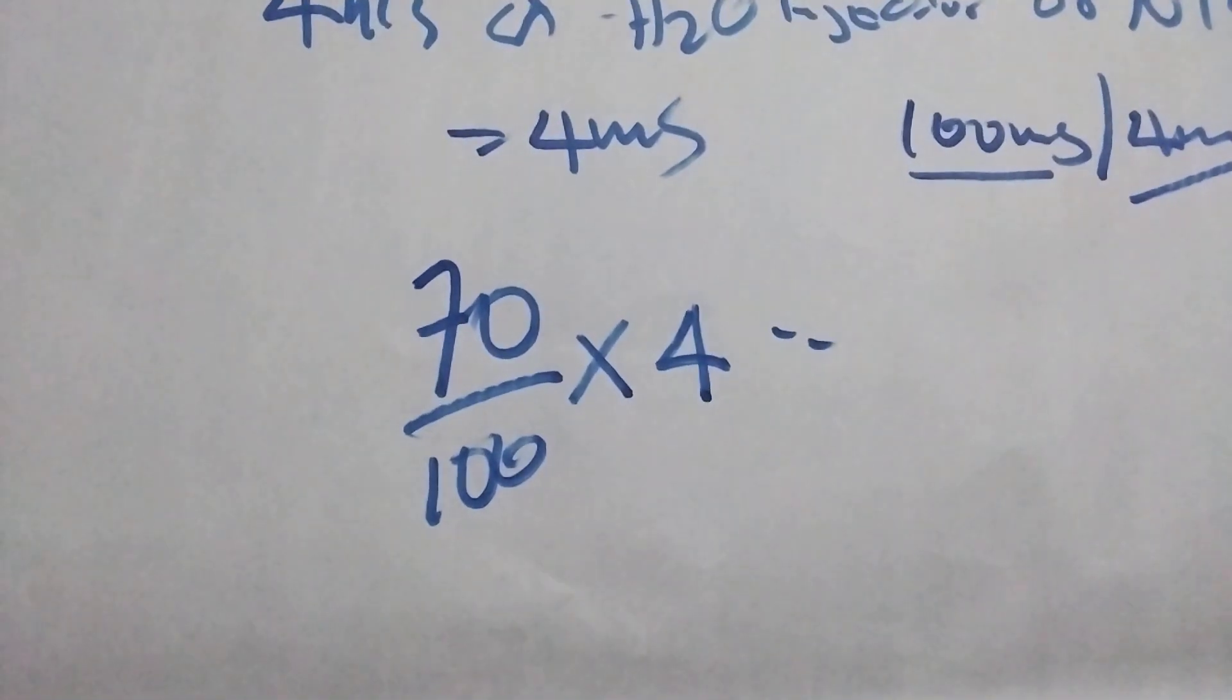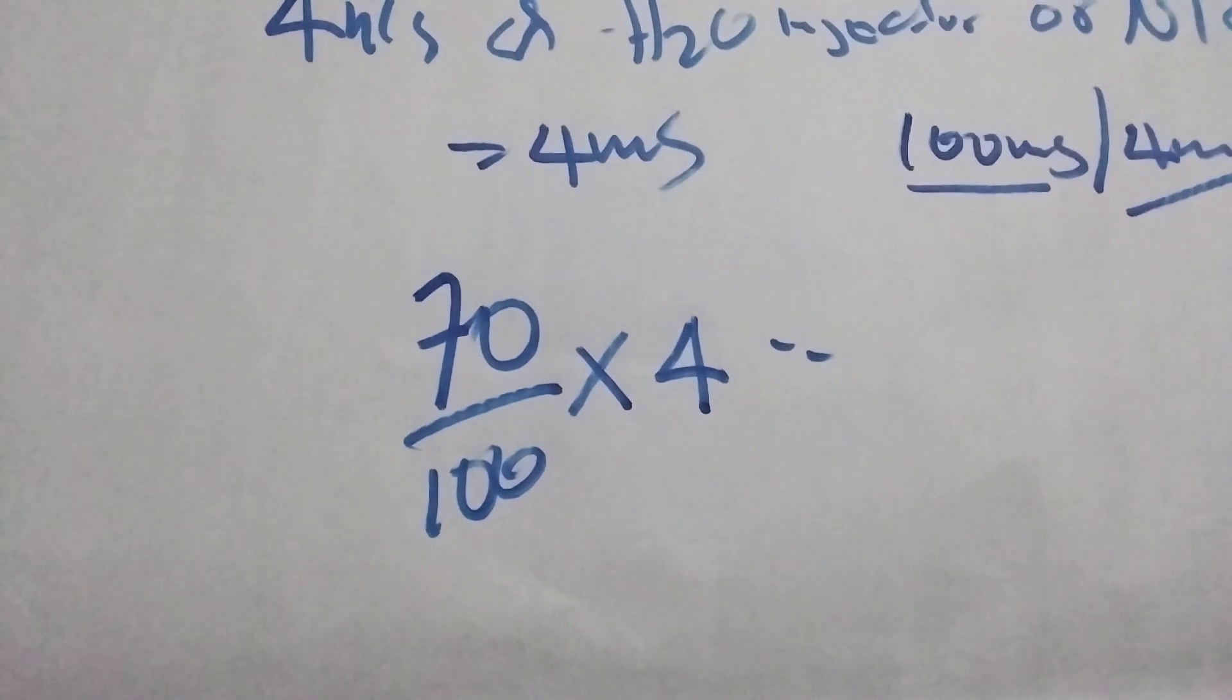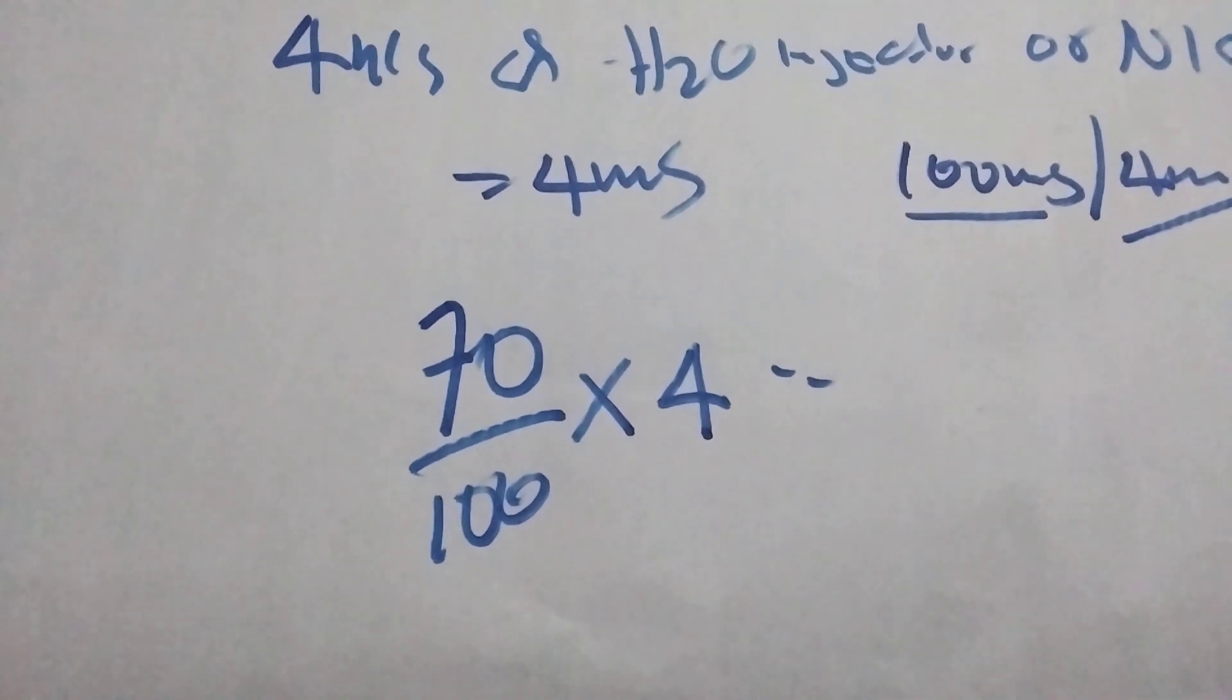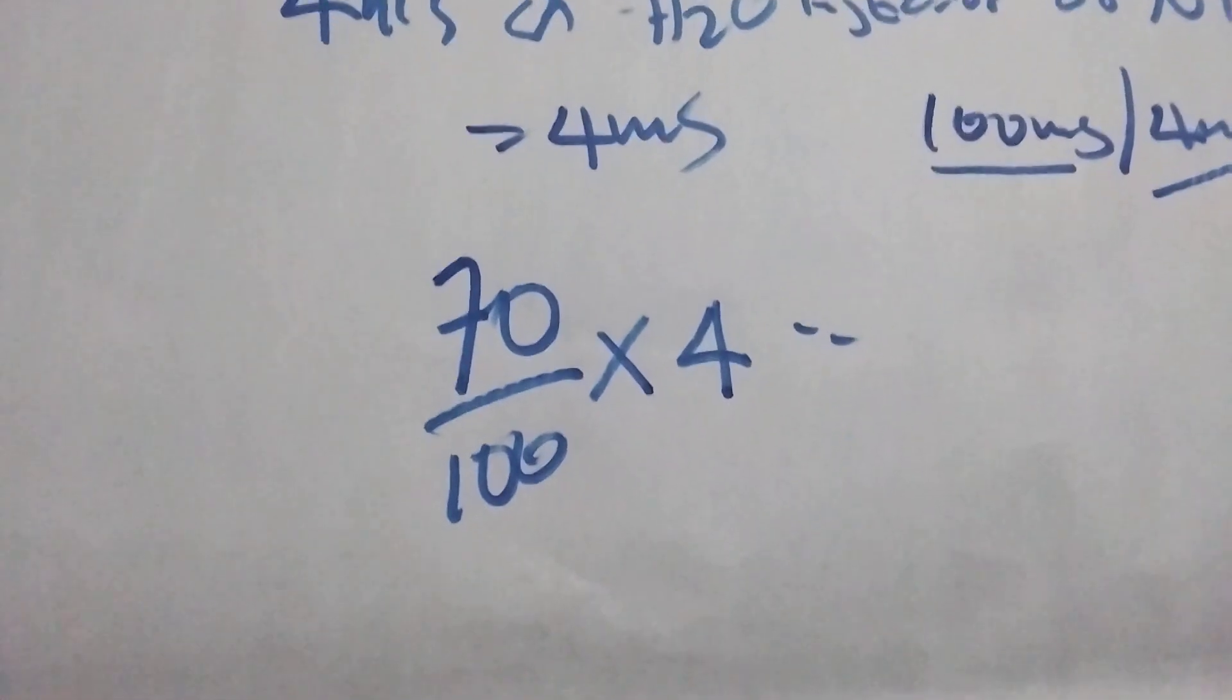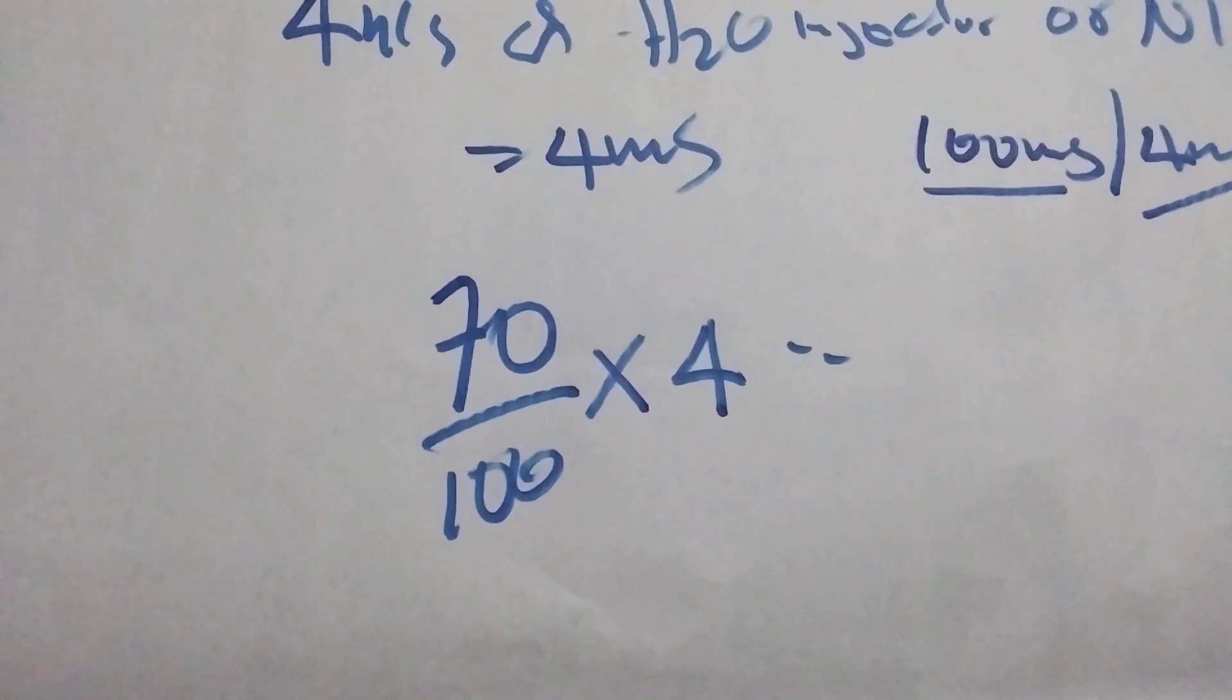For children, we are going to calculate this one. 70 divided by 100 times 4. So what will we get? 2.8.